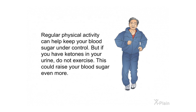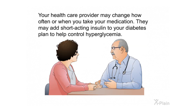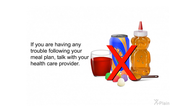Regular physical activity can help keep your blood sugar under control, but if you have ketones in your urine, do not exercise — this could raise your blood sugar even more. Your health care provider may change how often or when you take your medication, and may add short-acting insulin to your diabetes plan. If you are having any trouble following your meal plan, talk with your health care provider.